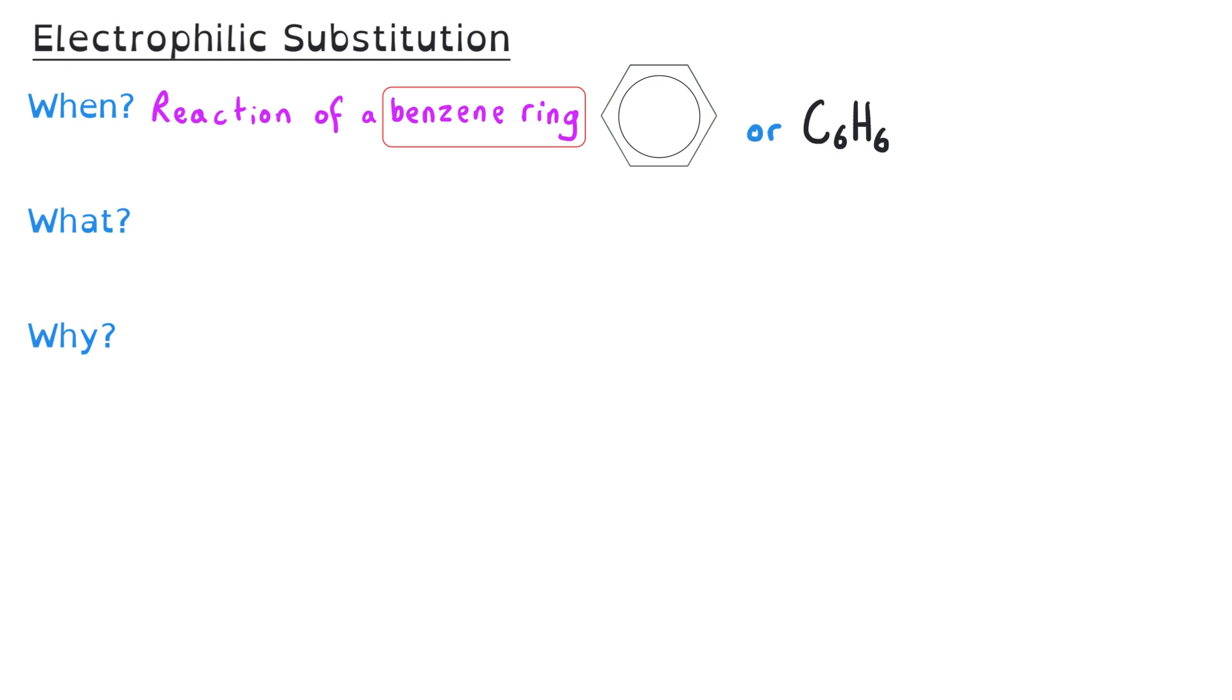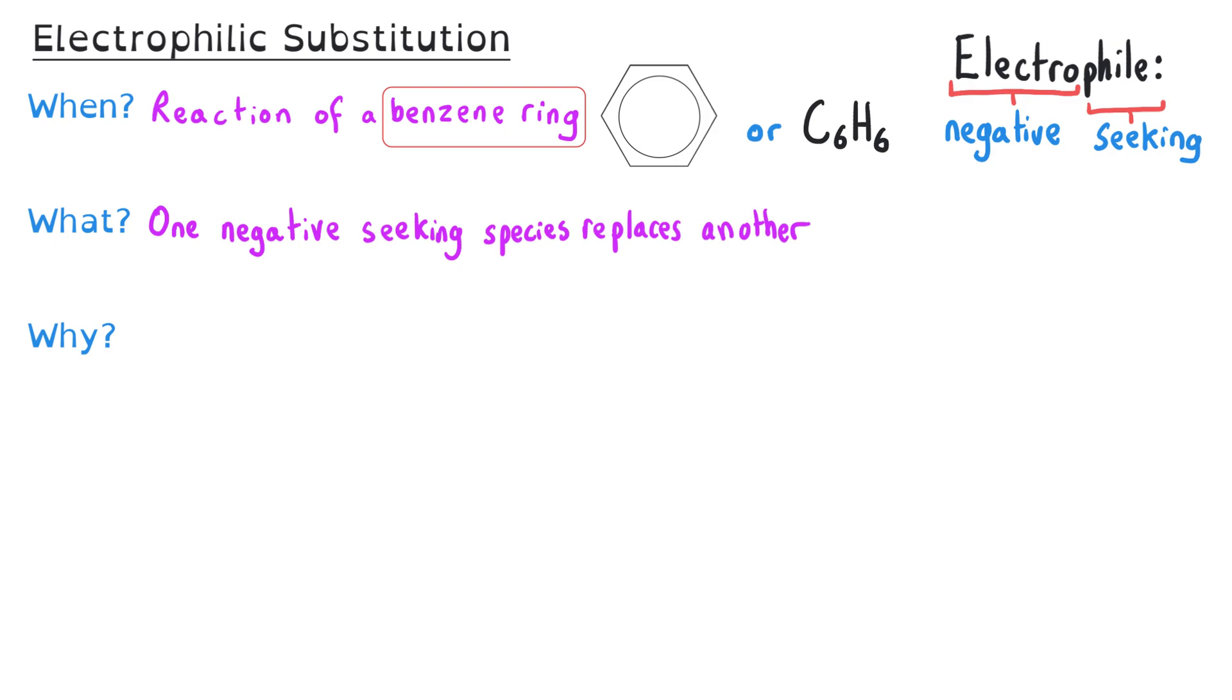What occurs in simple terms is one negative seeking species replaces another, and in electrophilic substitution it's always an H+ ion that is replaced. An electrophile, if we break that word into two pieces, is something that is negative seeking. So really what we're talking about is something that is a positive ion or something that is electron deficient, delta plus.